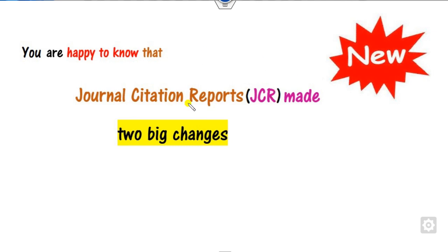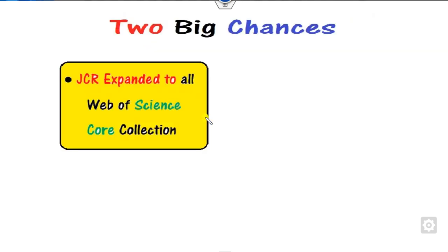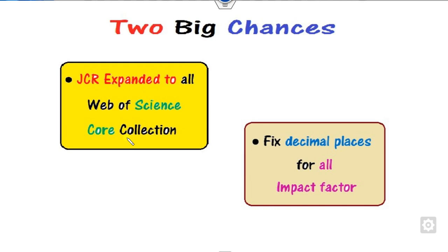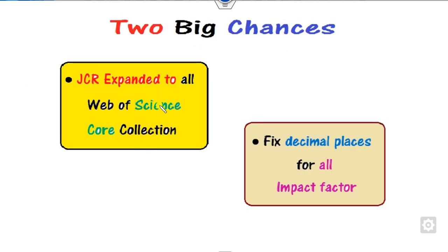The JCR has made two big changes which will be launched in June 2023. The first big change is that the JCR is expanded to all the Web of Science collections. The second is that they will fix some decimal places to define the impact factor. As we all know, the impact factor depends on journal indexing.